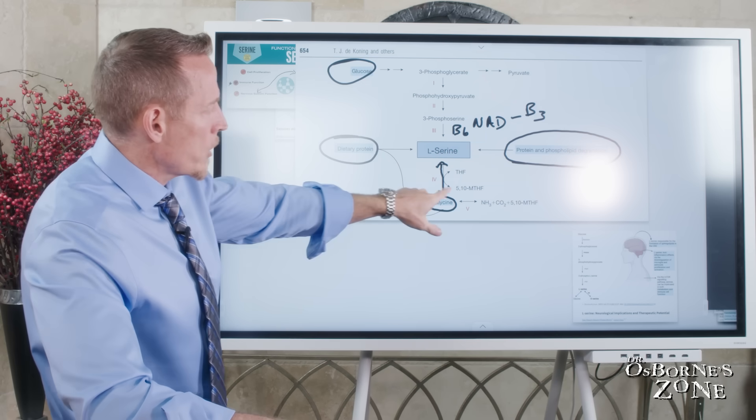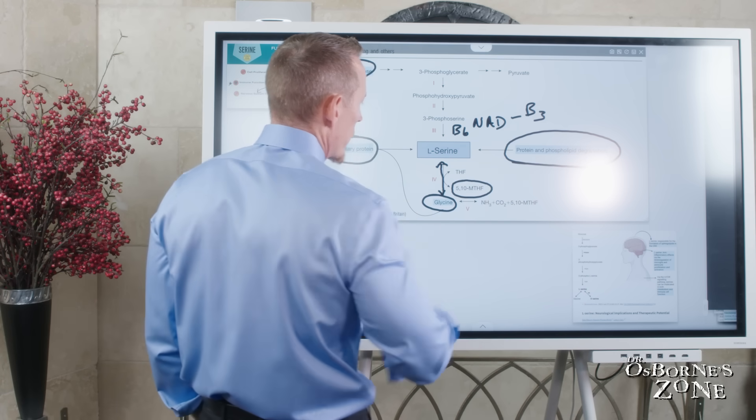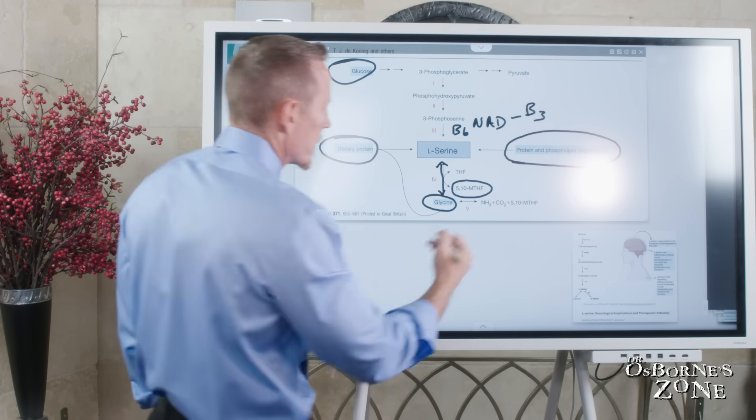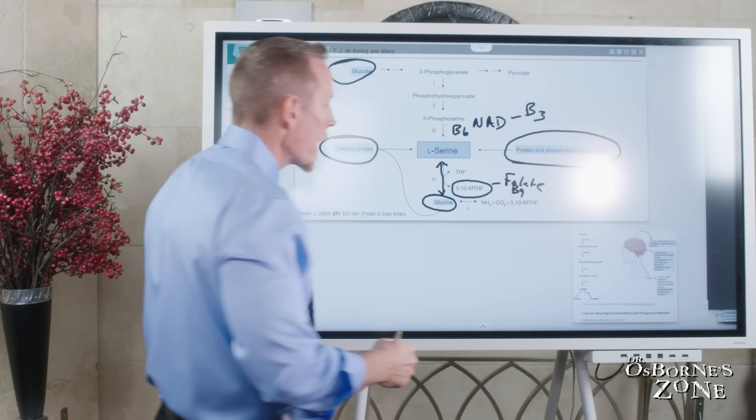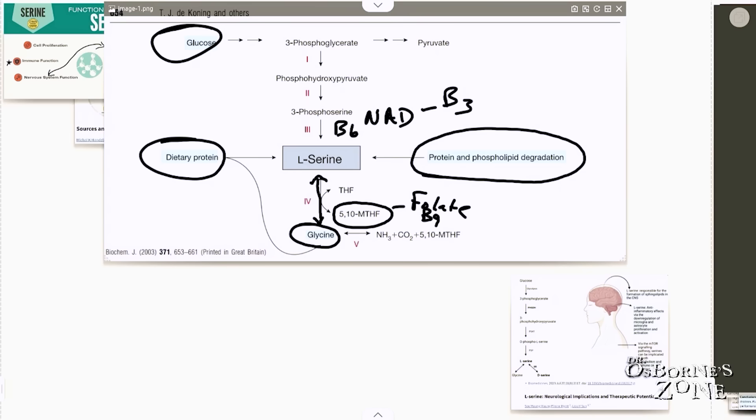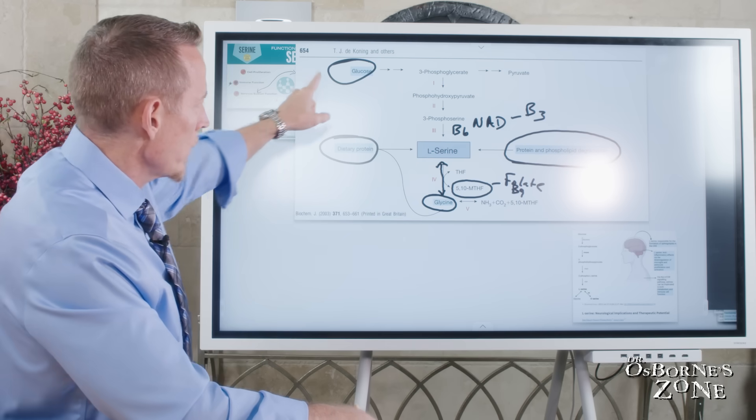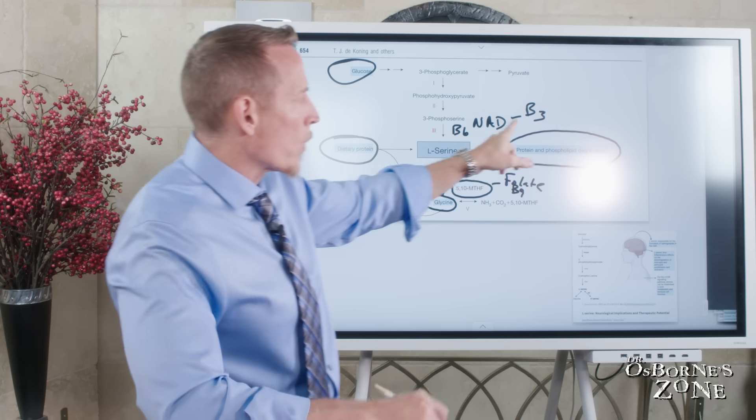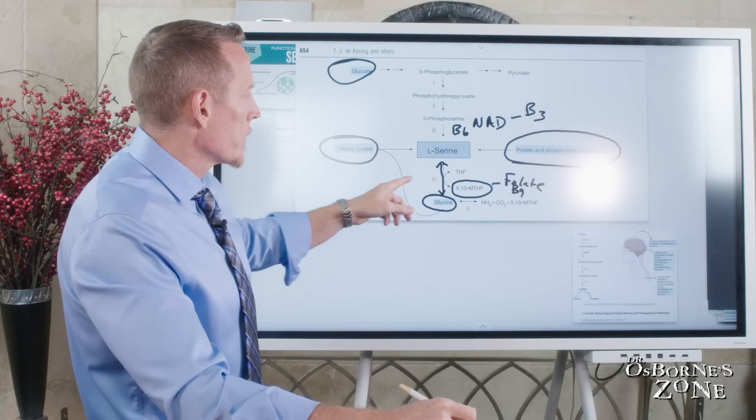We can also make serine from glycine. And in order to do that requires 5,10-MTHF. That's methyl tetrahydrofolate, otherwise known as folate or vitamin B9. So our body will take methylated vitamin B9 and through this enzymatic conversion, we will make L-serine from L-glycine. So glycine is also an amino acid. These two are interchangeable. So we can get serine from glucose, from intake of dietary protein, from the breakdown of existing protein or the degradation of phospholipids, as well as from converting it from glycine.